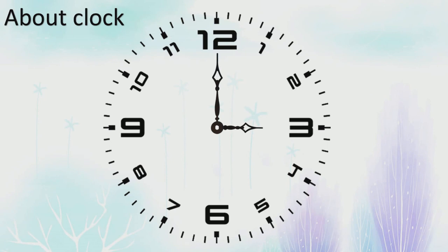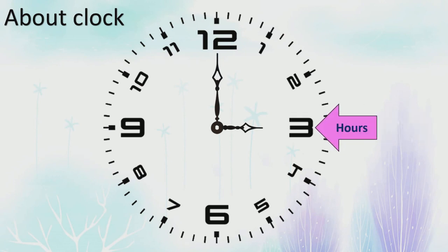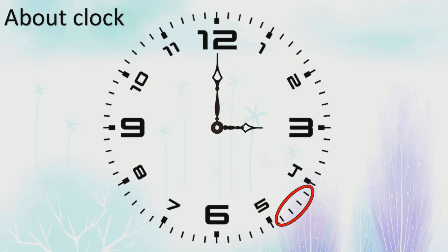What else should you know about the clock? Can you see the numbers on the clock? These numbers represent hours. You will also notice there are tiny lines drawn on the clock. These tiny lines represent minutes.